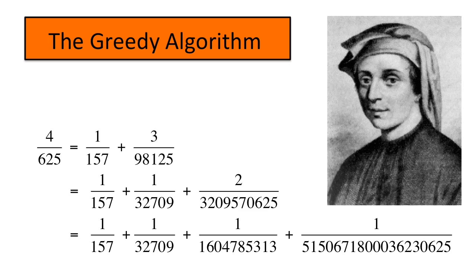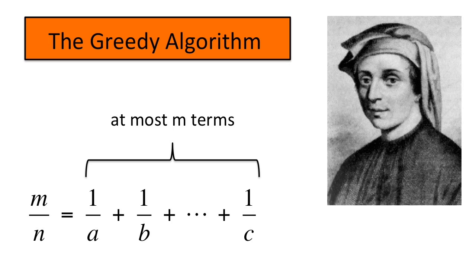Now take the remaining fraction, subtract its largest possible unit fraction, and so on. Note that in each step, the numerator of the remaining term goes down. This always happens with the greedy algorithm, and so the fraction m over n can always be written as an Egyptian fraction with no more than m terms.